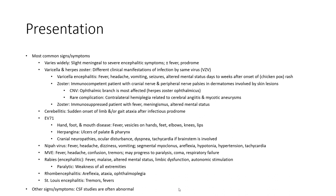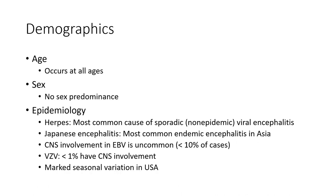CSF studies are often abnormal. Demographics: occurs at older age, no sex predominance. Herpes simplex virus is the most common cause of sporadic viral encephalitis. Japanese encephalitis is the most common endemic encephalitis in Asia. CNS involvement in EBV is uncommon, less than 10% of cases.